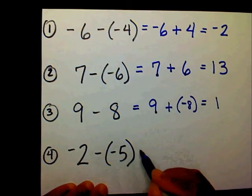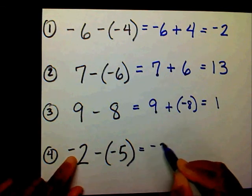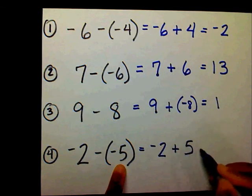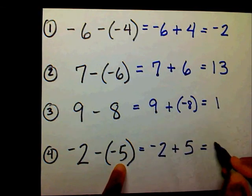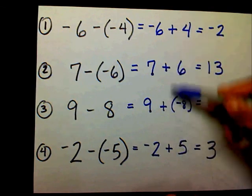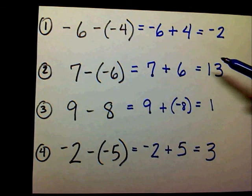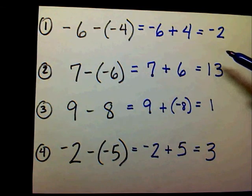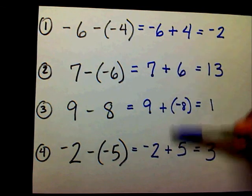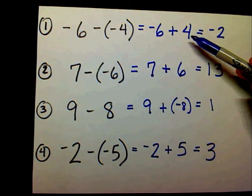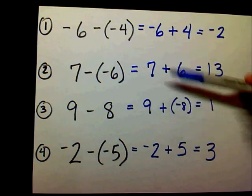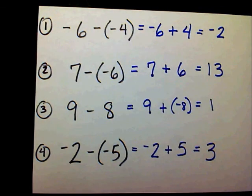And my last problem, I have negative 2. I want to add the opposite of negative 5 is 5. Negative 2 plus 5 is 3. If you have some difficulty with this step, I would suggest you go back and look at the adding integers video. Because they'll go through an explanation of how you add integers. But as you can tell, if you can add integers, subtraction is just a piece of cake.